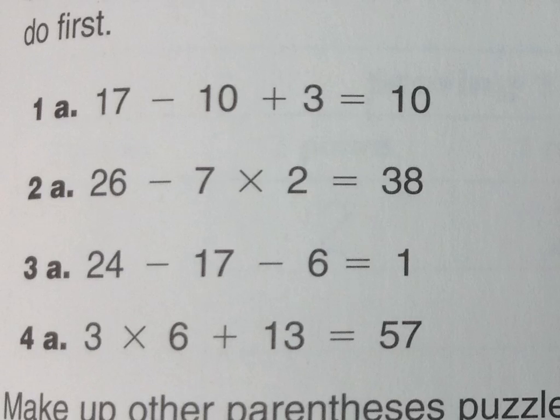Let me erase that. Okay let's try again. Now my parentheses are here. 17 minus 10 is going to give us 7. 7 plus 3 equals 10. That is good. We're all set there.